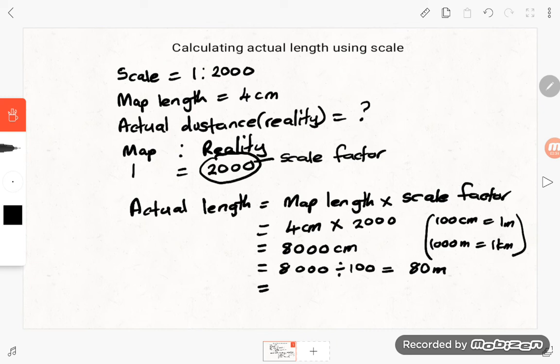Remember the word kilo means 1000, so 1000 meters is equal to 1 kilometer. So if we want to convert 80 meters to kilometers we have to divide it by 1000, and then we are going to get 0.08 kilometers.